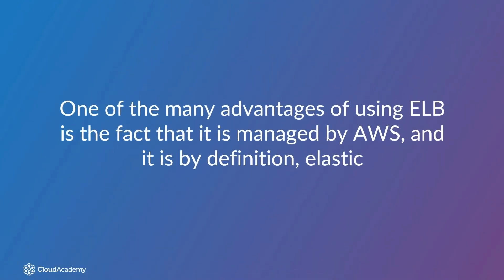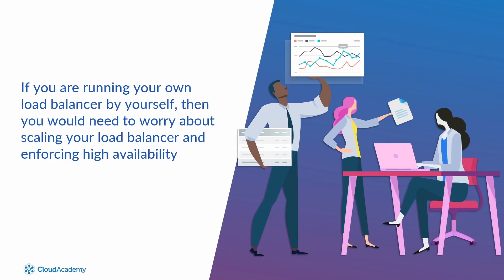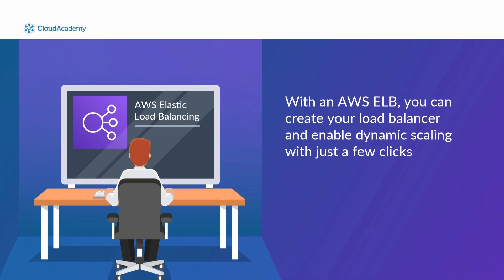One of the many advantages of using ELB is the fact that it is managed by AWS and it is by definition elastic. This means that it will automatically scale to meet your incoming traffic as the incoming traffic scales both up and down. If you are a system administrator or a DevOps engineer running your own load balancer yourself, you would need to worry about scaling your load balancer and enforcing high availability. With an AWS ELB, you can create your load balancer and enable dynamic scaling with just a few clicks. Depending on your traffic distribution requirements, there are three ELBs available within AWS to choose from.